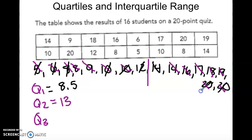And then we need Q3, two middle numbers, find the average. Q3 is 17.5. And then the interquartile range is going to be Q3 minus Q1. So you're going to have Q3 is 17.5, Q1 is 8.5. So the interquartile range is 9.